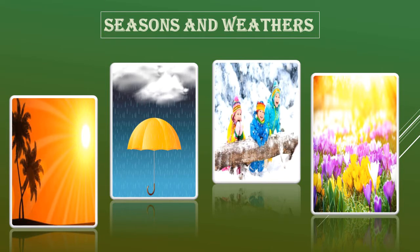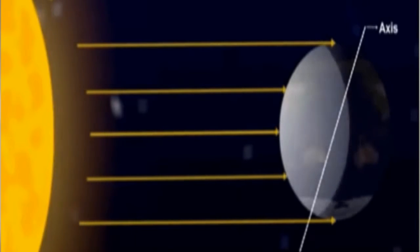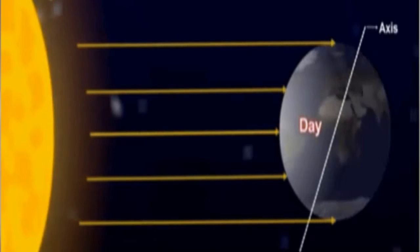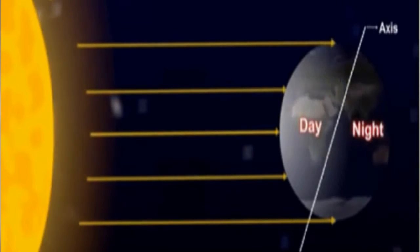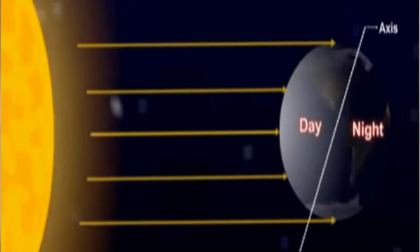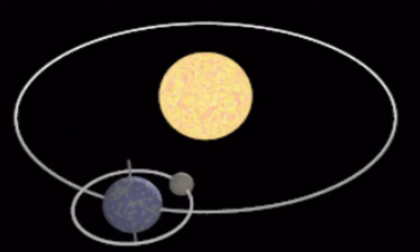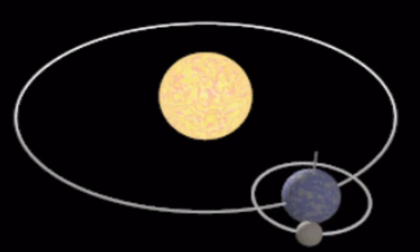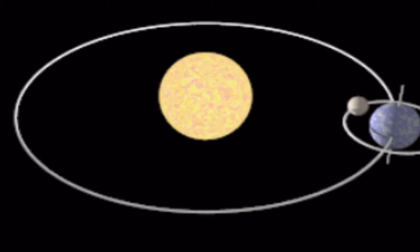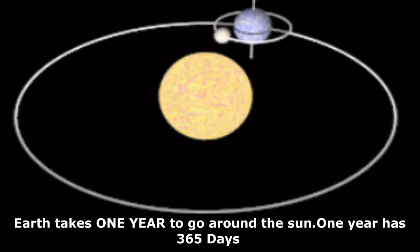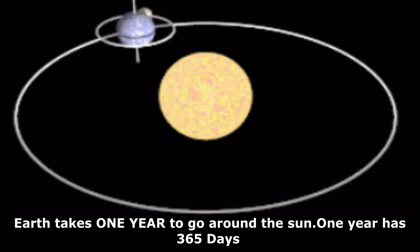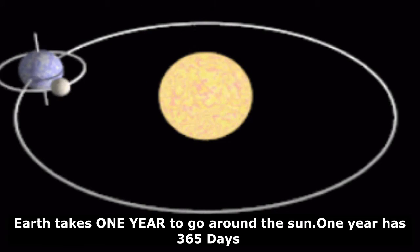Today we will learn about seasons and weather. Seasons are created by two events. First, the rotation of earth that gives us day and night. And the rotation of the earth around the sun gives us seasons. It takes one year for the earth to go around the sun. One year has 365 days.